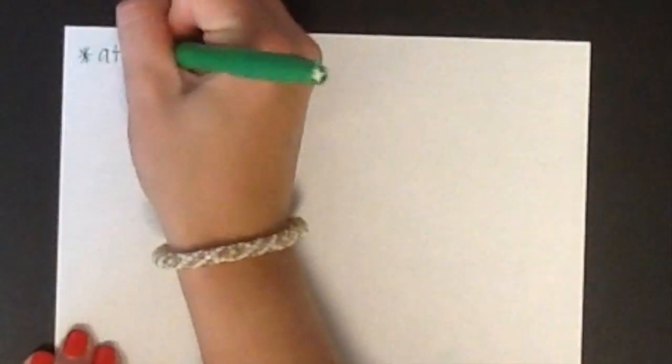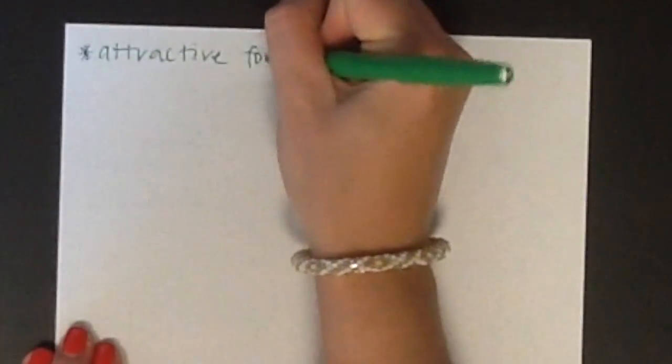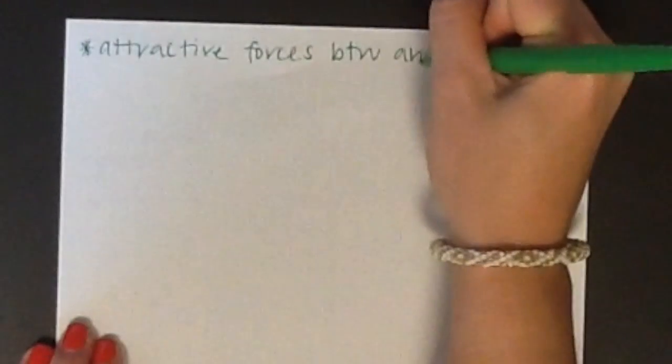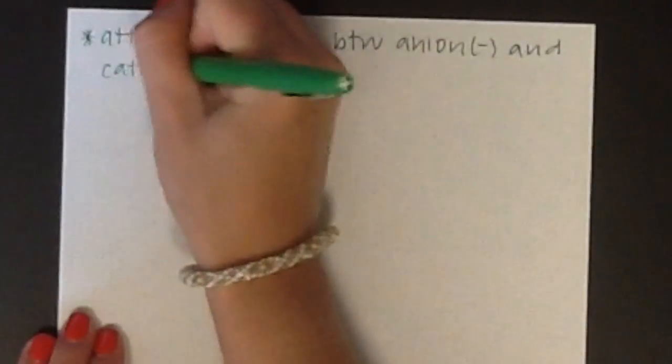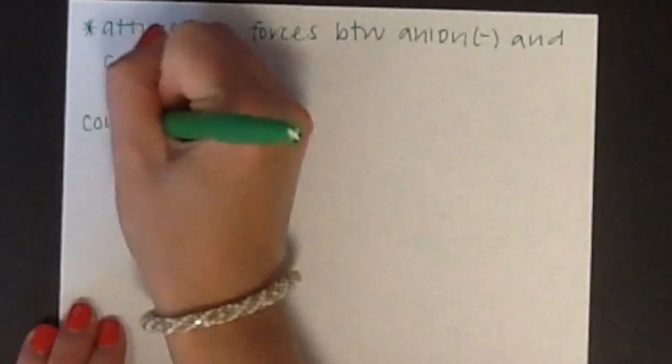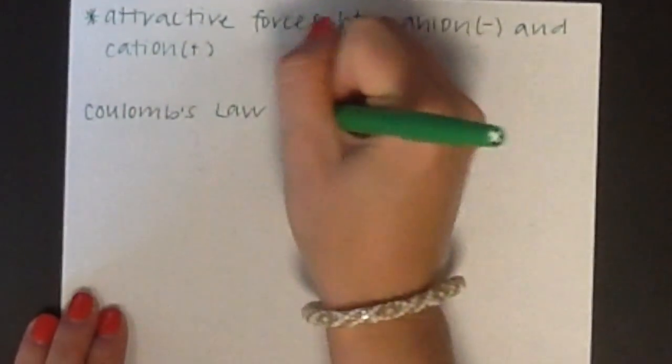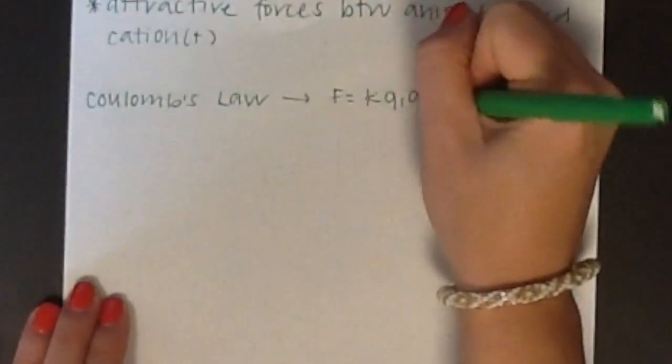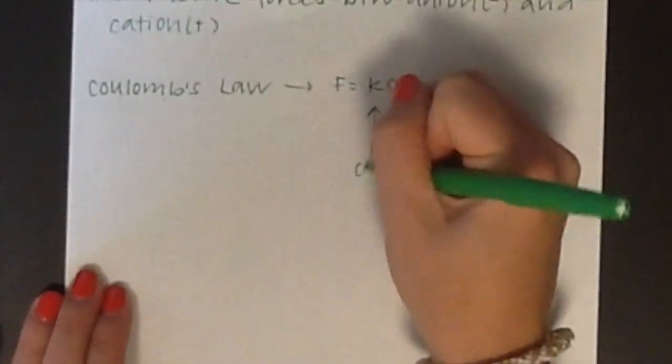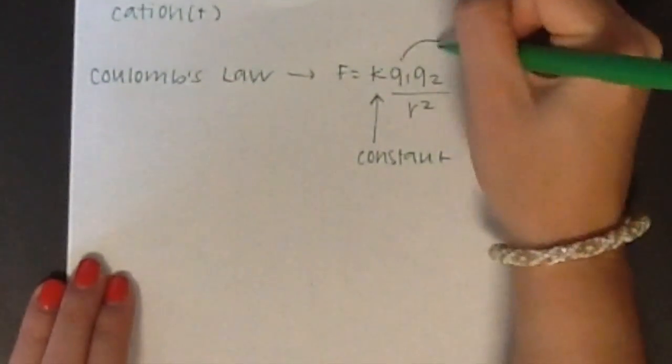There are several factors used to determine the solubility of ionic compounds. One important factor is the strength of the attractive forces between the anions and cations of the compound. This can be used using Coulomb's law, which is F = K × Q1 × Q2 / R².